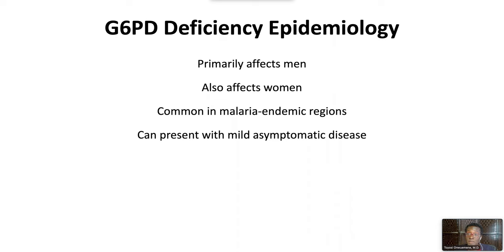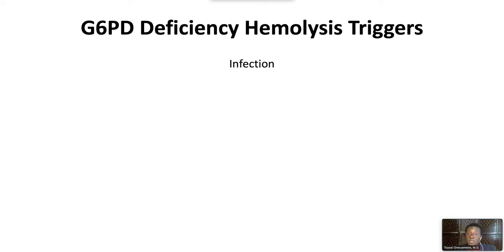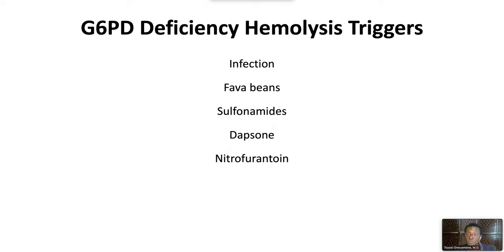Some patients present with mild asymptomatic disease, some with chronic non-spherocytic hemolysis, and some with acute hemolysis after exposure to red cell oxidants. Hemolysis triggers include infection, foods like fava beans, drugs like sulfonamides including dapsone, antibiotics like nitrofurantoin, anti-malarials like chloroquine, and anti-uricemic drugs like rasburicase.